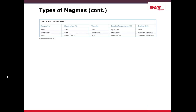The opposite end of the spectrum is felsic. Mafic has a large magnesium content, while felsic has a high iron content. Felsic has very high silica content — more than 65 percent — and is very viscous or resistant to flow. It has a relatively lower eruption temperature, though that is still 900 degrees Celsius.